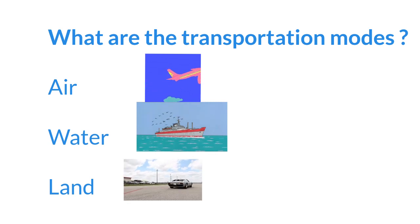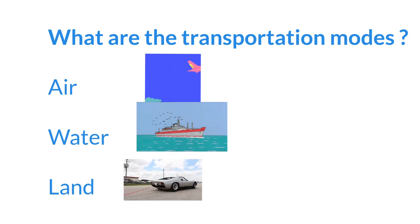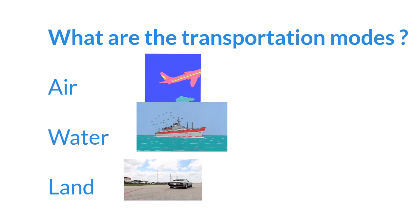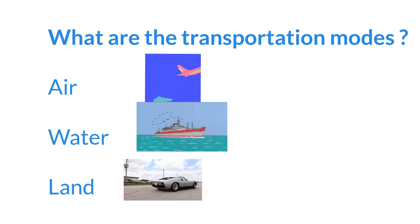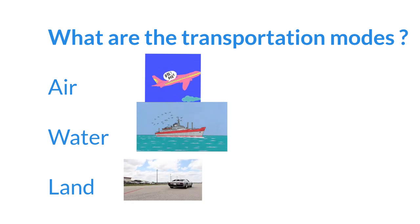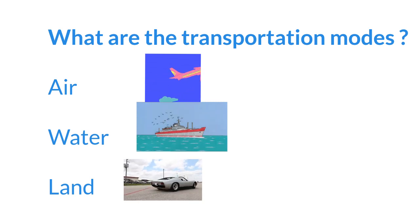Now, when you go outside, see if you can spot any land, water, or air transportation modes. Maybe you will see a car on the road, a boat on a pond, or even an airplane soaring in the sky.